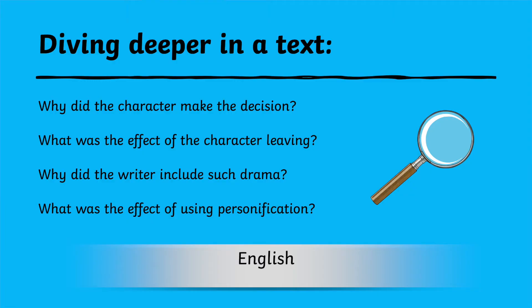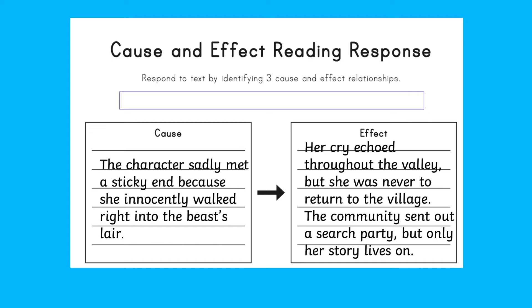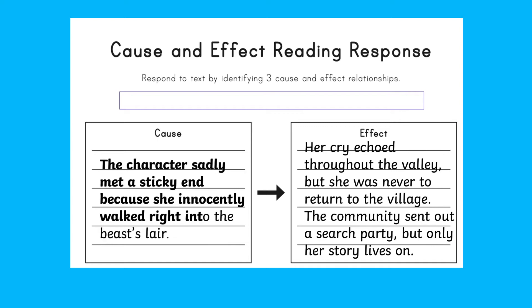It may be within a text in English — what was the cause of the character's demise? Why did the story climax in that way? Children can analyse plot, character intention, and find evidence in the text to support their reasoning. During close reading of a text, our super templates can be completed to detail the cause and the resulting effects.